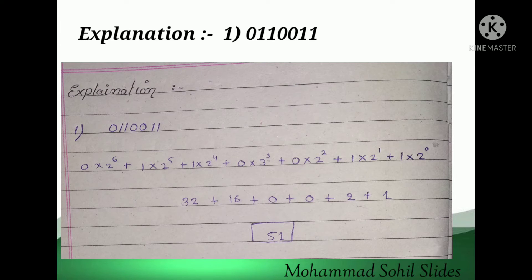The positional weight is 2. Multiply this number by 2 from right hand side to the left hand side, and power of the positional weight starts from 0 to the given number. After solving this we will get the answer that is 51.